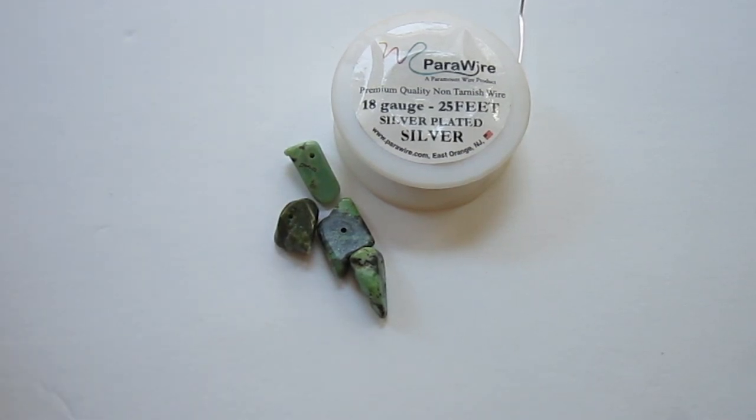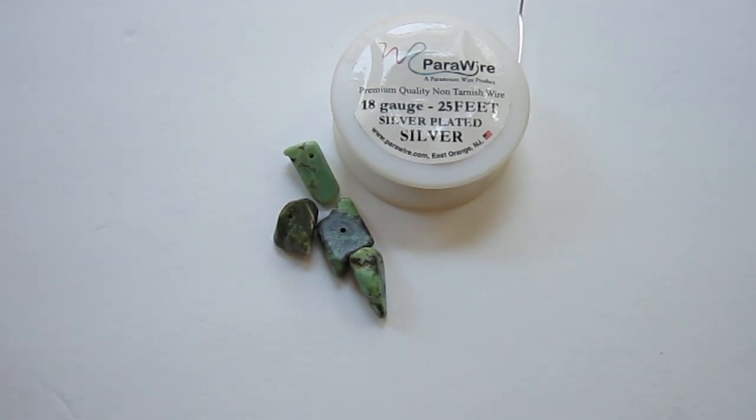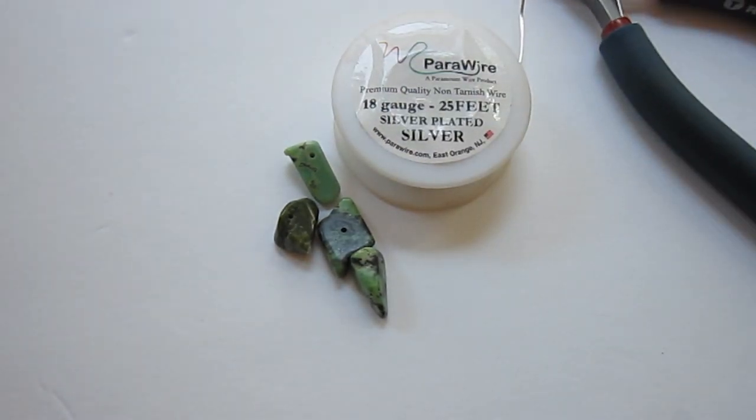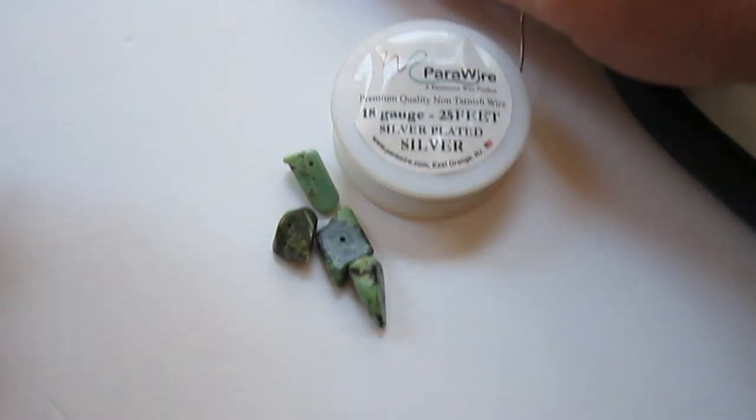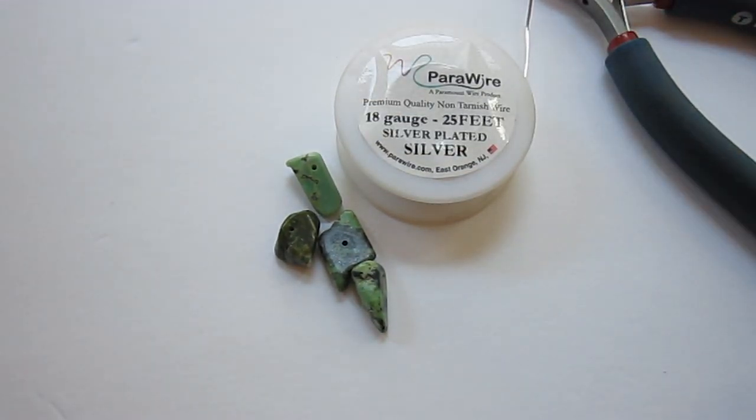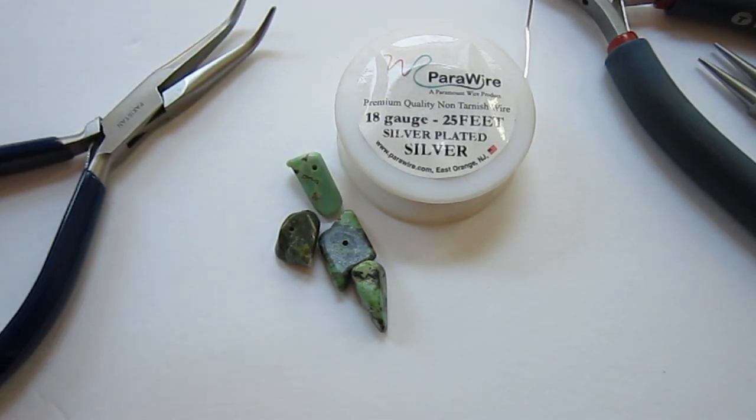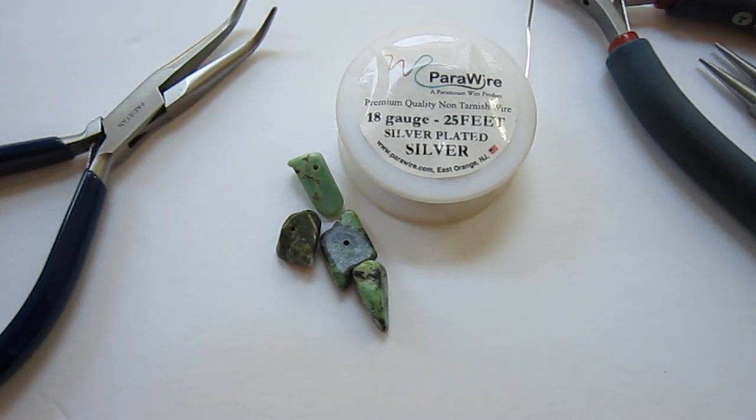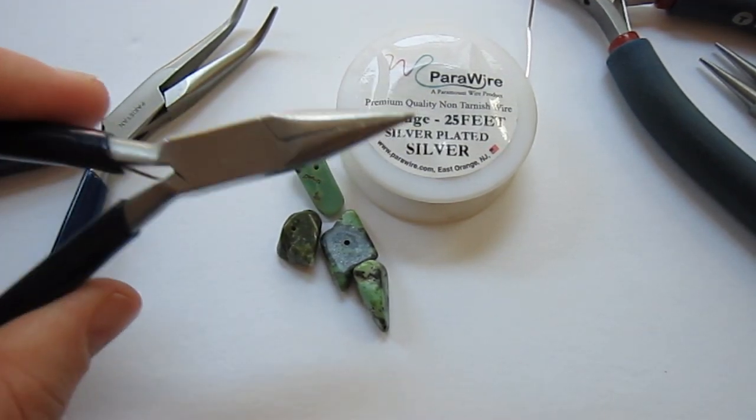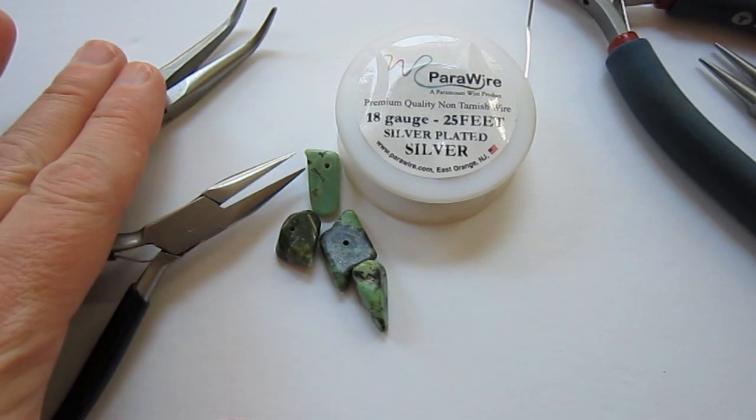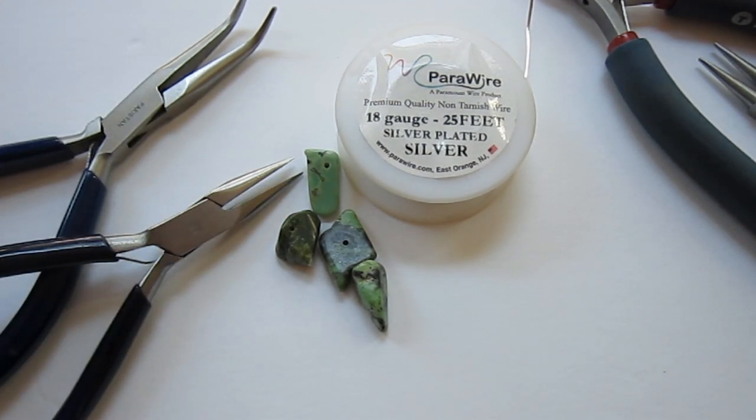I mentioned the gemstone chips. I made a pendant with the chips which are much smaller than this. I just used the regular 20 gauge wire for that one. You are going to want your normal wire cutters, round nose pliers, bent nose pliers, or any other chain nose pliers. You'll need your chain nose pliers and then a second pair of pliers. I like to use bent nose pliers.